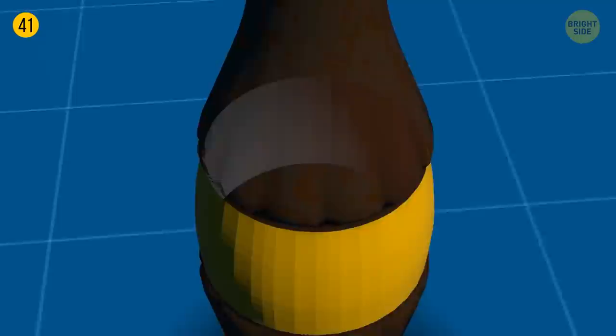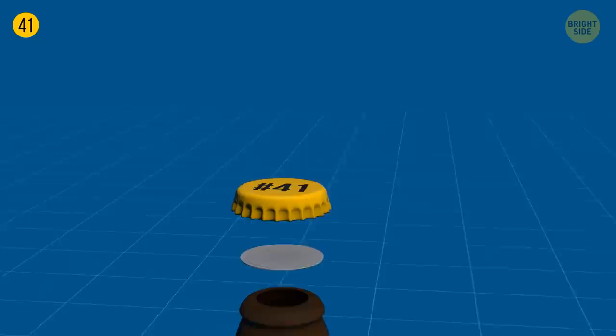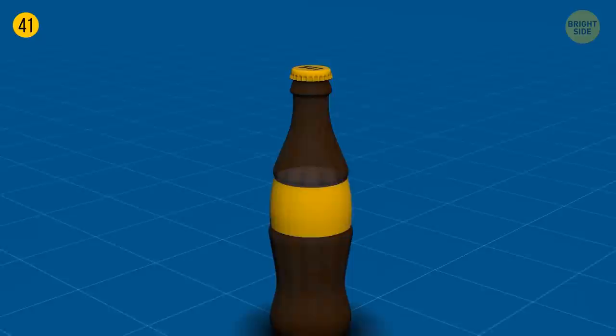A tiny plastic disc under a bottle lid is what makes soda sparkling. While the lid keeps the liquid inside, this plastic disc holds the gases inside. Without it, it would just be sweet water.